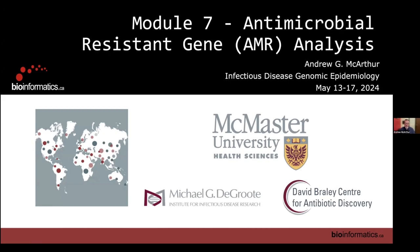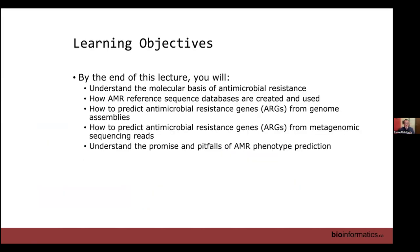I'm in the Institute for Infectious Disease Research as well as the David Braley Centre for Antibiotic Discovery. My group focuses on enabling public health, researchers, and companies to combat AMR using genomic data — we build databases and algorithms to annotate and understand the mechanisms and drugs behind AMR. Today's objectives: background on the molecular basis of antimicrobial resistance, how reference sequence databases are created and trusted, predicting AMR genes from genome assemblies and metagenomic reads, and understanding the pitfalls of phenotypic and genotypic AMR prediction.